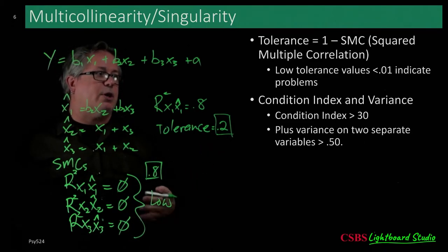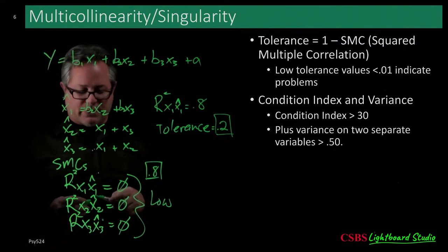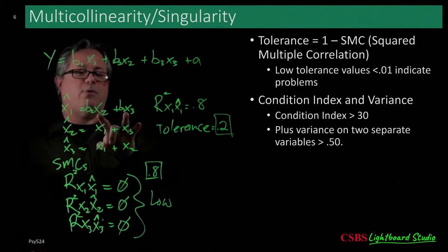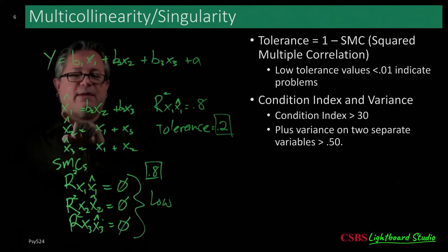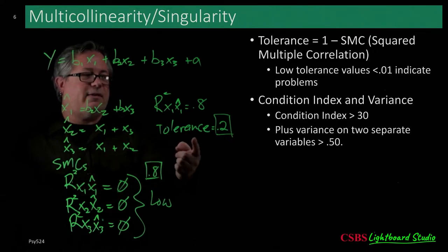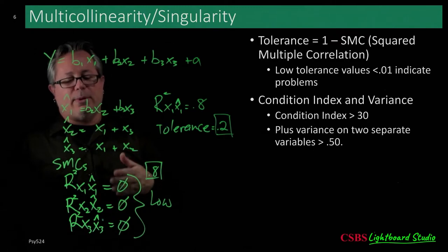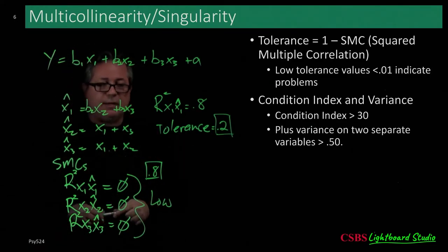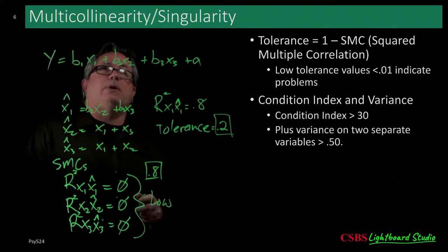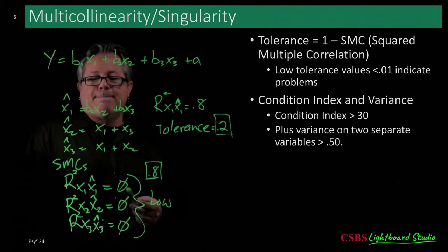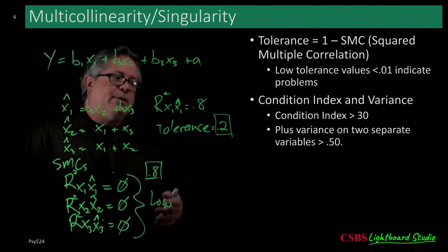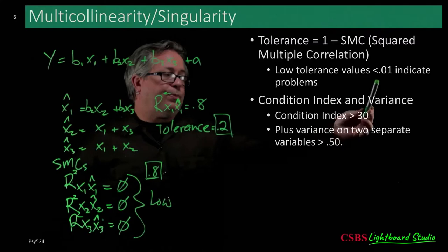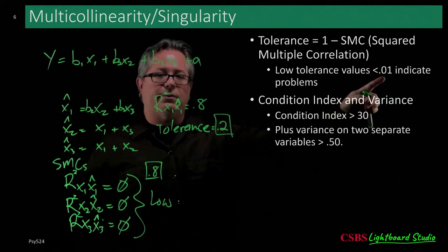This is where you get cases where you can have an overall significant multiple regression but individual predictors are not significant — because they're overlapping so much. Tolerance is one way to detect this. The lower the tolerance value, the worse the multicollinearity. The book's cutoff of 0.01 is well beyond where you actually have a problem in practice.